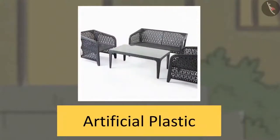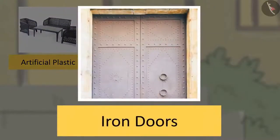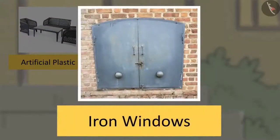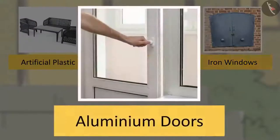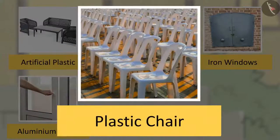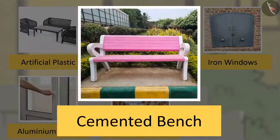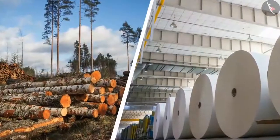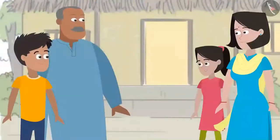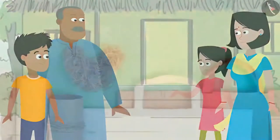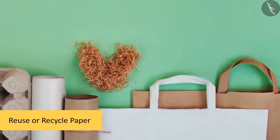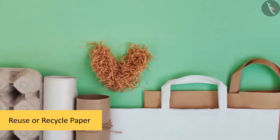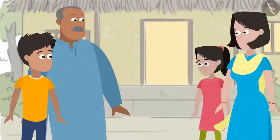Alternatives include artificial plastic, iron doors, iron windows, aluminium doors, plastic chairs, and cemented benches. Do you know even paper is made from trees? Then I am surely going to save paper. Bhaiya, why don't we reuse paper? Paper pulp can be used to make different things. Yup, that's good — we must try it at home also.